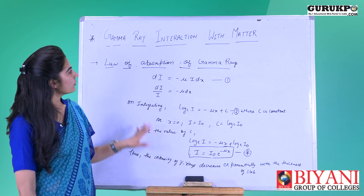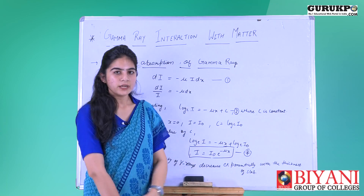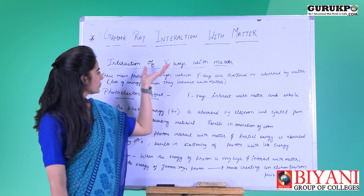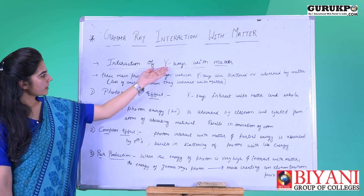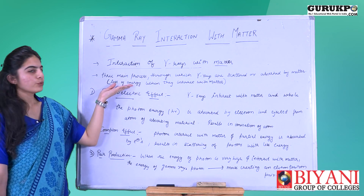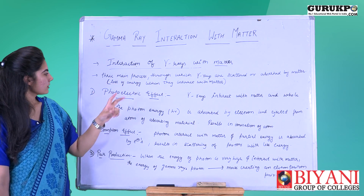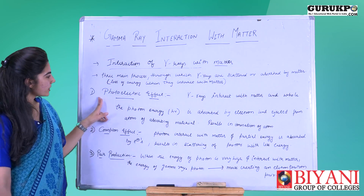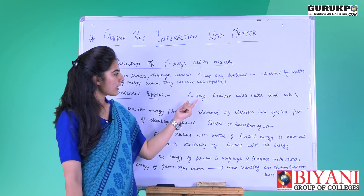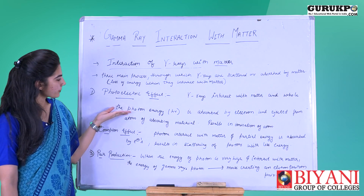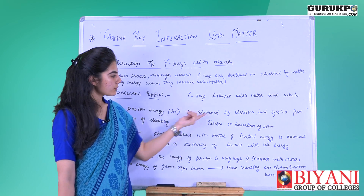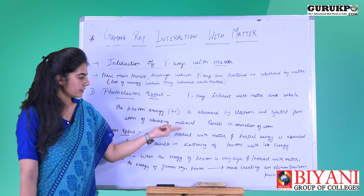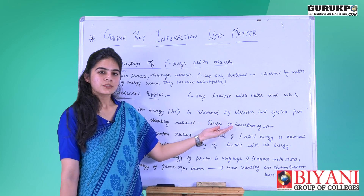This is called the law of absorption of gamma rays with matter. When gamma rays interact with matter, there is a loss of energy. We have three main processes through which gamma rays are scattered or absorbed by matter. The first is the photoelectric effect. In this process, when gamma rays interact with matter, the photon energy hν is absorbed by an electron which is ejected from the atom of the absorbing material, resulting in ionization of the atom.